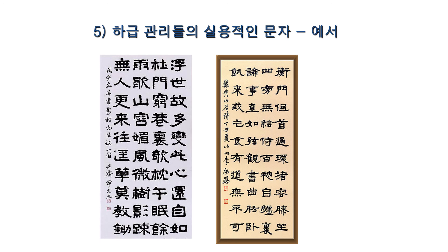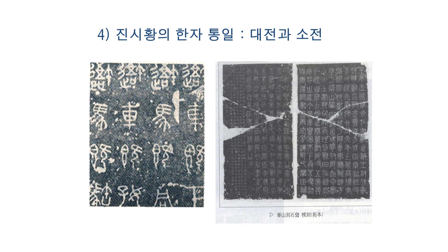이 얘기를 하던 목적이 드디어 나왔어요. 우리가 금문자를 어디서부터 보느냐, 예서부터다 얘기를 했어요. 여기까지 대전과 소전까지를 고문자라고 합니다.